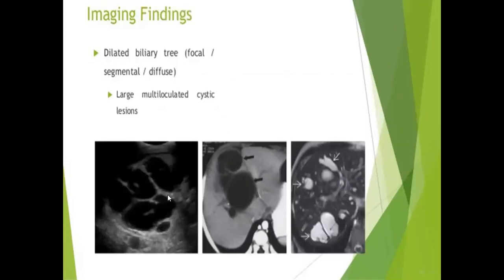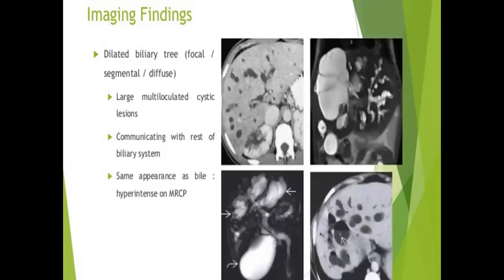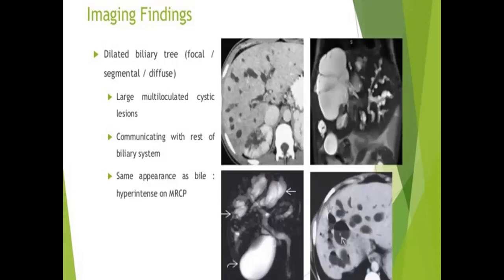On imaging — ultrasound, CT, and MRI — the hallmark findings of Caroli disease include dilated biliary tree that may be focal, segmental, or diffuse; large multiloculate cystic lesions communicating with the rest of the biliary system; and the same appearance as bile hyperintensity on MRCP. The central dot sign is specific for Caroli disease — a normal-diameter portal radical surrounded by dilated bile duct with no enhancement.